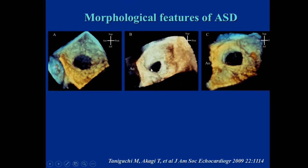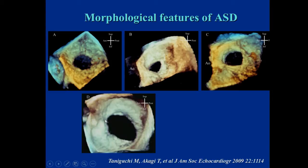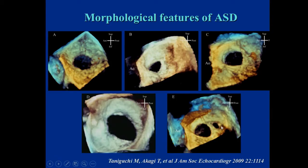The majority of patients have a relatively small aortic rim. Some patients have limited aortic rim deficiency, others have a large portion of the rim deficient, some have an inferior rim deficiency, and some have two defects. In the past we only measured Qp/Qs at 1.5 or 2.0, but now anatomical evaluation is very important for procedural success.